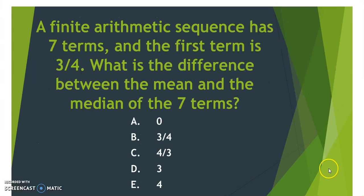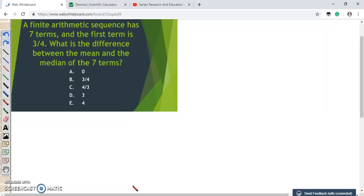Hello everyone, welcome back. Today we are going to discuss an ACT math question. The link to this question has been given in the description of the video. The question is: a finite arithmetic sequence has 7 terms and the first term is 3/4. What is the difference between the mean and the median of the 7 terms? Five answer options are given here. I will suggest you to pause the video and try to solve the problem by yourself. Hope by now you already have solved this problem and chose the correct answer. Let us just now do it together.